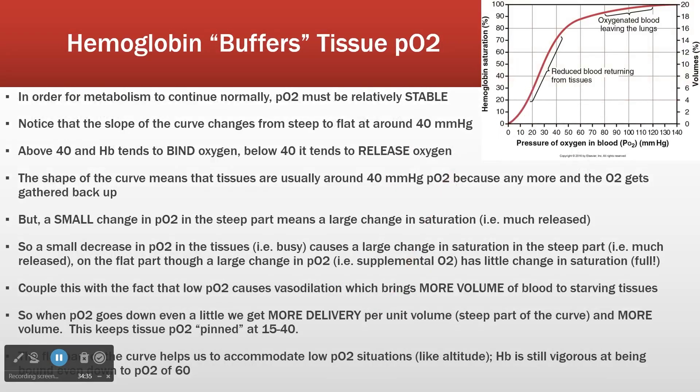What is the point of the hemoglobin saturation curve? It gathers up oxygen in areas where there's lots of it and drops it in places where there's not enough. Essentially, it keeps our PO2 relatively stable. We change from steep to flat at around 40, which tends to keep our oxygen concentration pinned to 40 at the low end. If PO2 drops below 40, hemoglobin starts releasing more oxygen until it gets back up to 40, so 40 tends to be our normal because that's the inflection point.